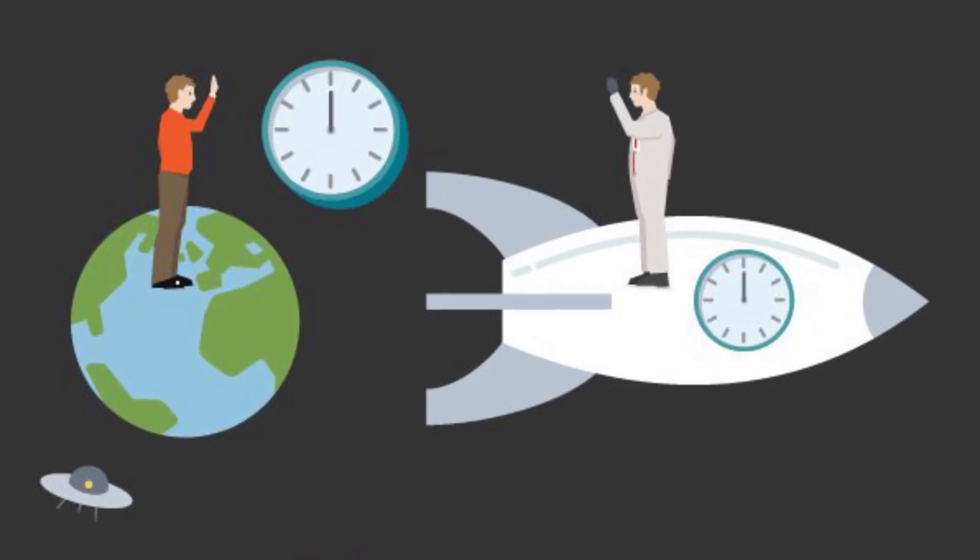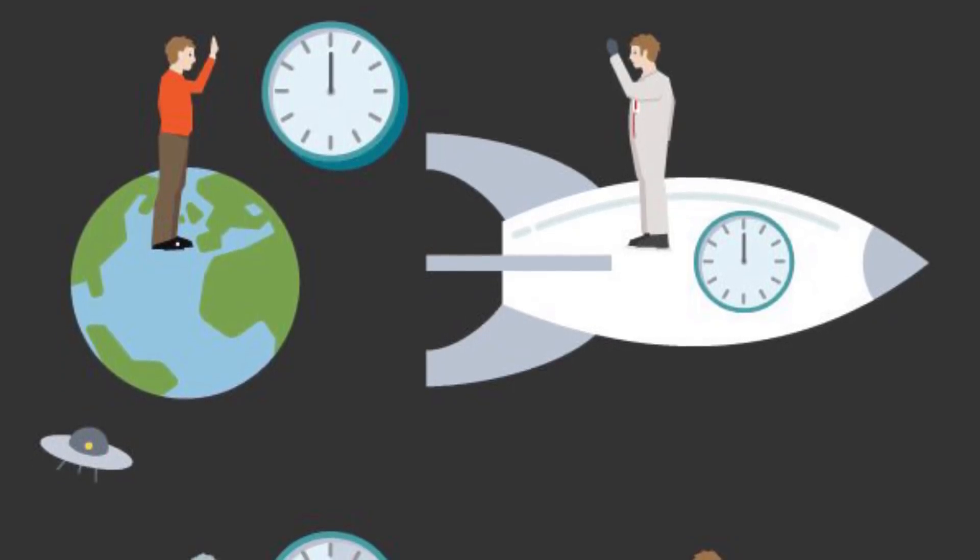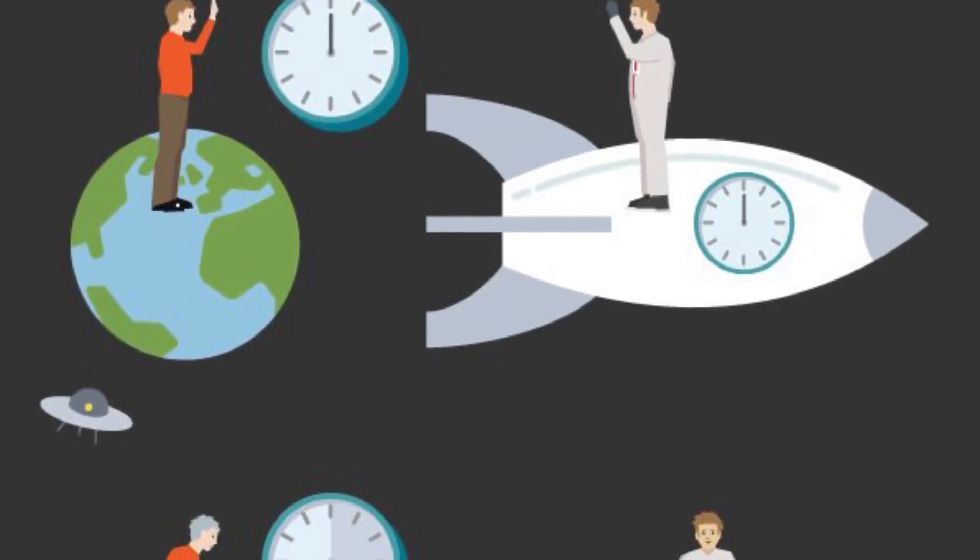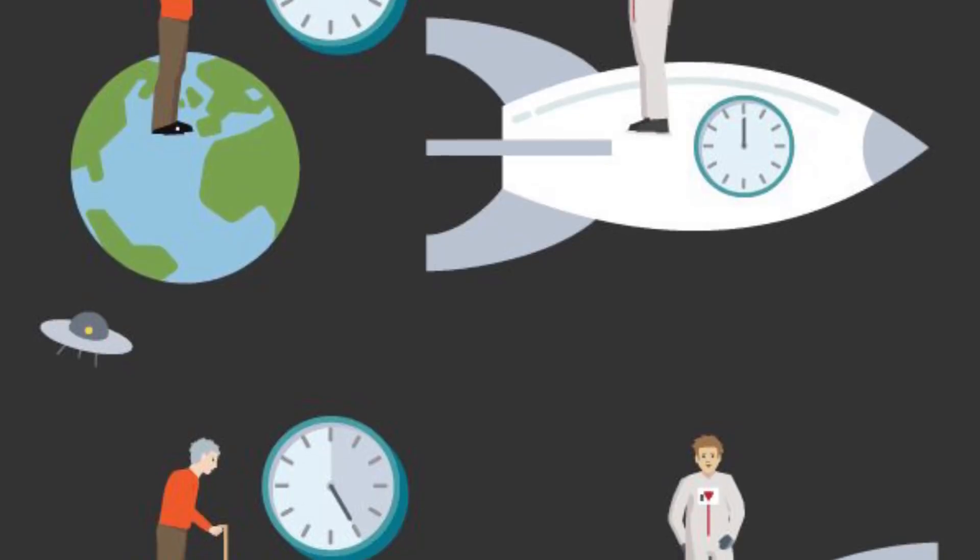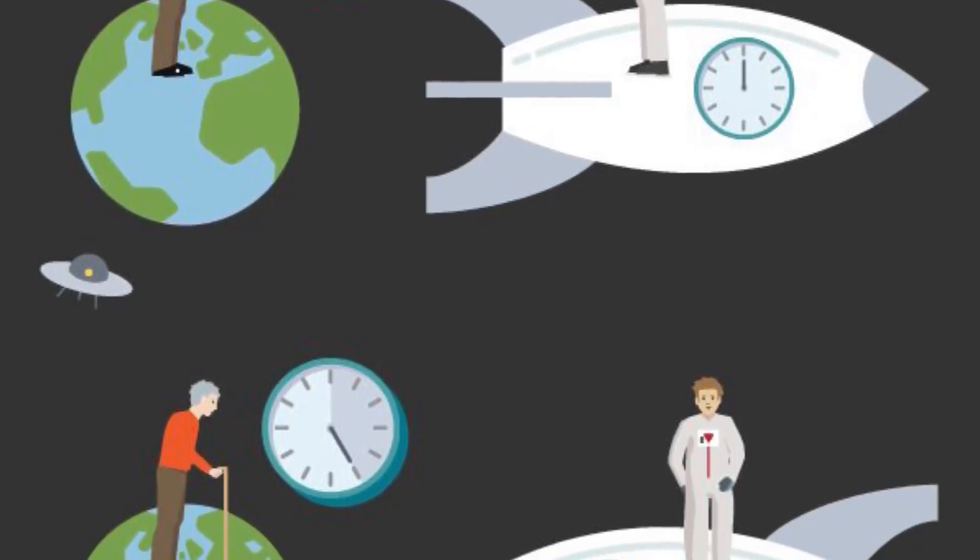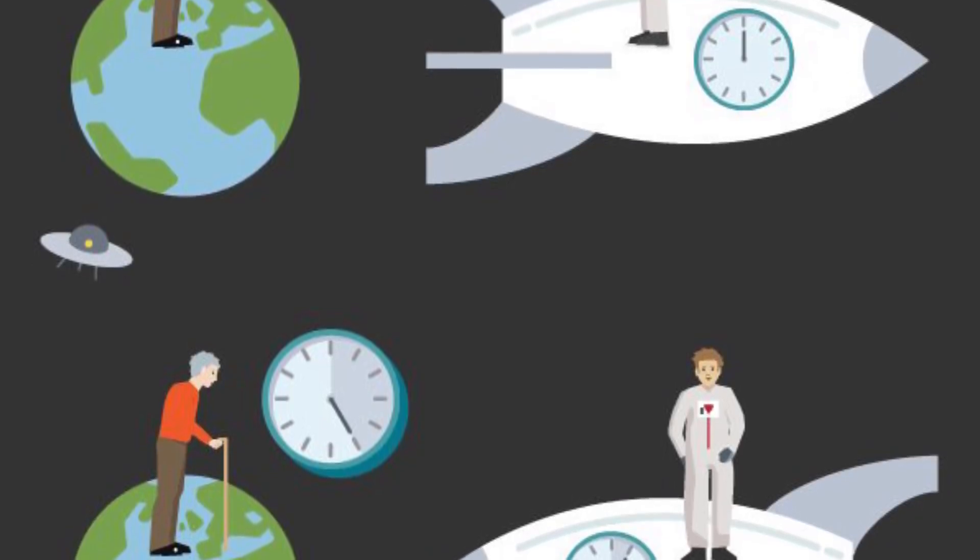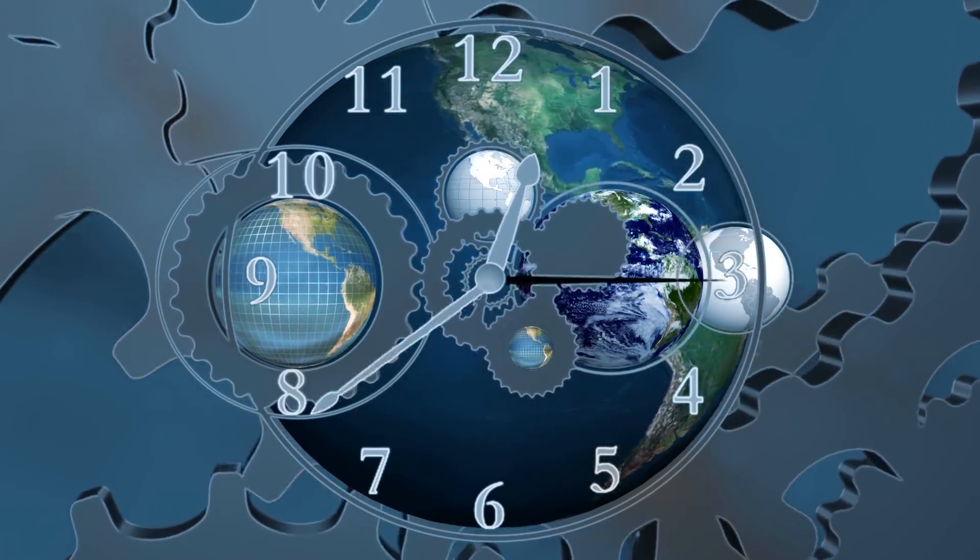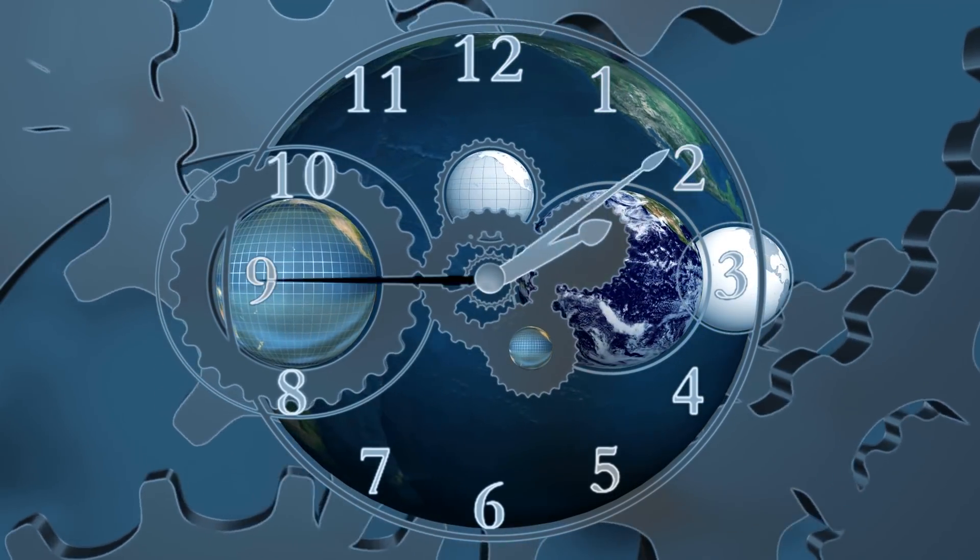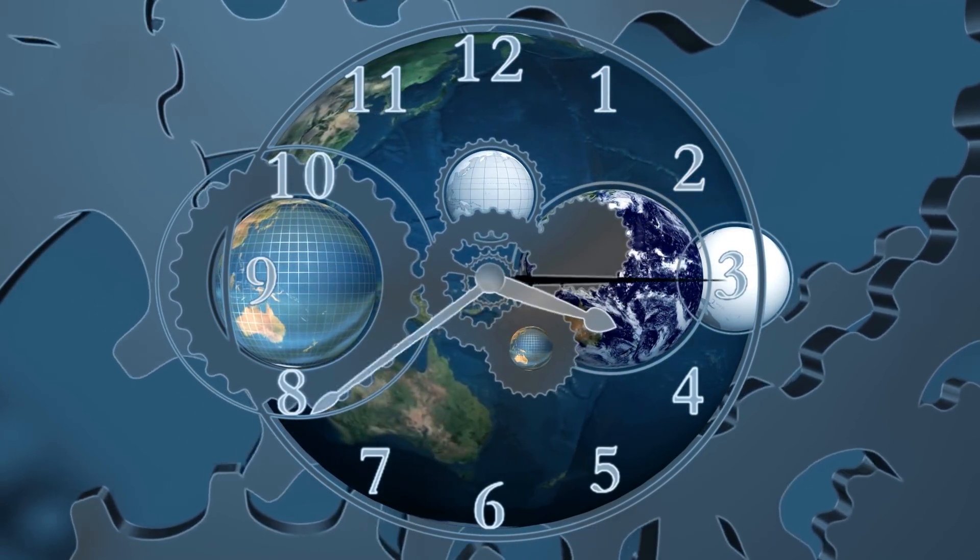One consequence of this is time dilation, which says that time ticks slower for moving objects compared to those that are standing still. As in, clocks tick slower and people age slower when they're moving. This is what makes it possible for a twin to go on a high-speed rocket and come back younger than the other. This has even been verified by putting very precise atomic clocks in orbit and having them come back slightly off from another here on Earth.